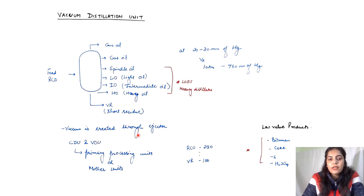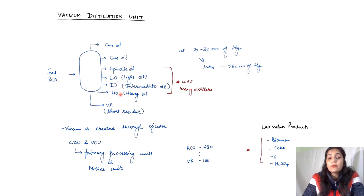The VDU and CDU — vacuum distillation unit and crude distillation unit — together form the primary processing units of any refinery. To give an example of yields: if we feed around 280 liters, approximately 180 liters will yield useful products such as gas oil, spindle oil, light oil, intermediate oil, and heavy oil, while around 100 liters will be VR — vacuum residue, also called short residue, because it has been reduced.